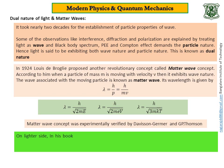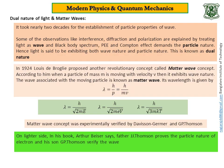On the lighter side, in his textbook, which I mentioned in my previous slide, Arthur Beiser says, Father proves the particle nature of electron and son verifies the wave nature of electron. The wave-particle duality seems to be their family business.